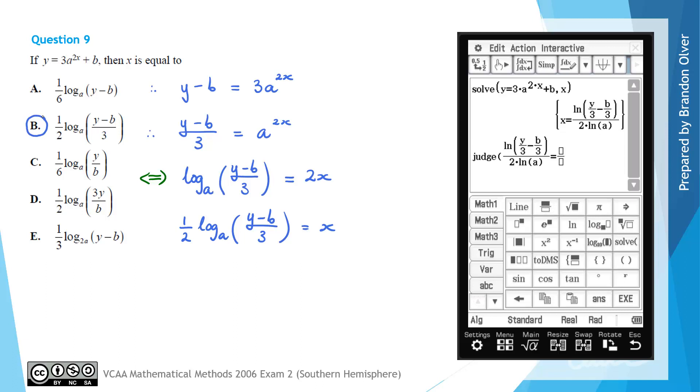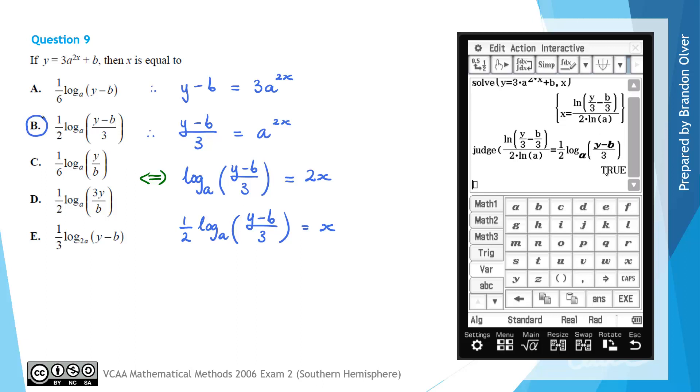And I want to judge that that expression is equal to the one that we found by hand which was 1 half. And then we had log a so I need log with a base that I can pick. I'm going to put a in there. And then we had a fraction in here which was y subtract the variable b on 3. And we now want to judge whether these two things are equivalent. So hitting execute the calculator tells us that that is in fact correct.